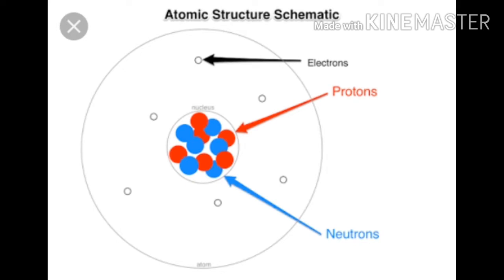Inside the atom, are there any particles? Yes, we can divide the atom and there are three subatomic particles present in the atom. What are subatomic particles? Proton, electron, and neutron. Proton and neutron are subatomic particles present inside the nucleus of an atom, whereas electron is a subatomic particle present outside the nucleus of an atom.